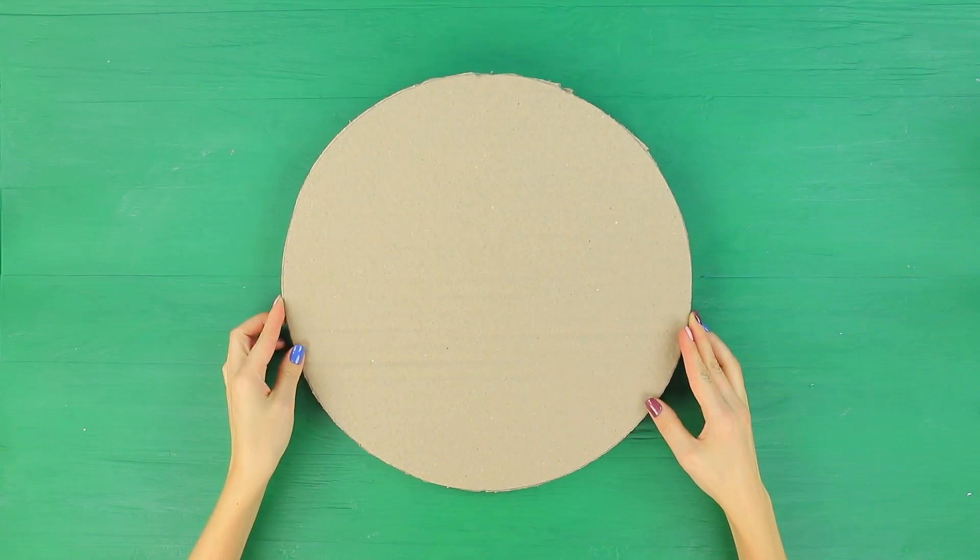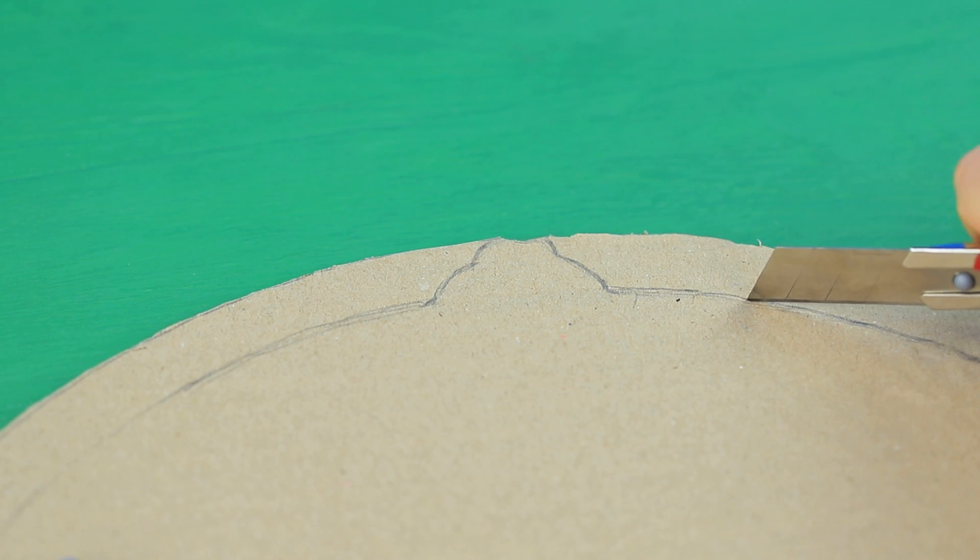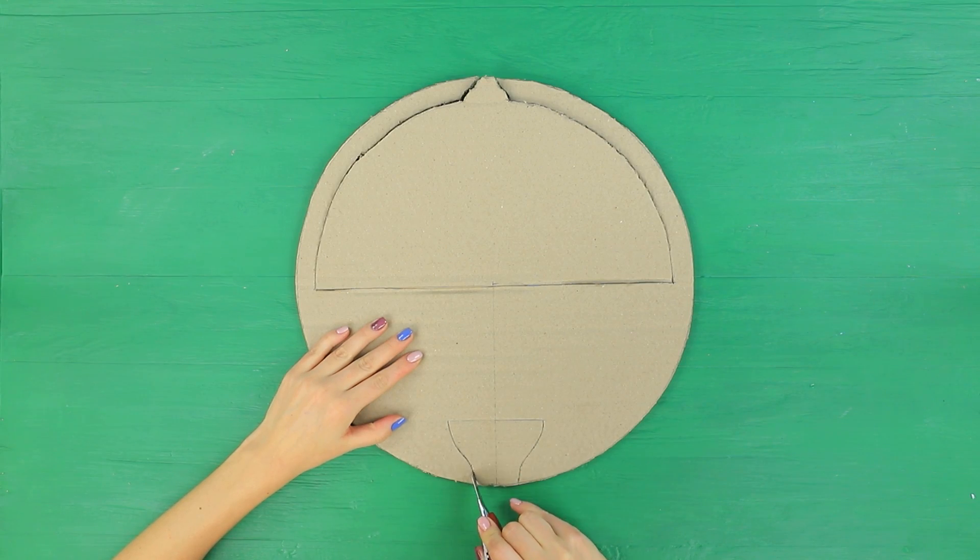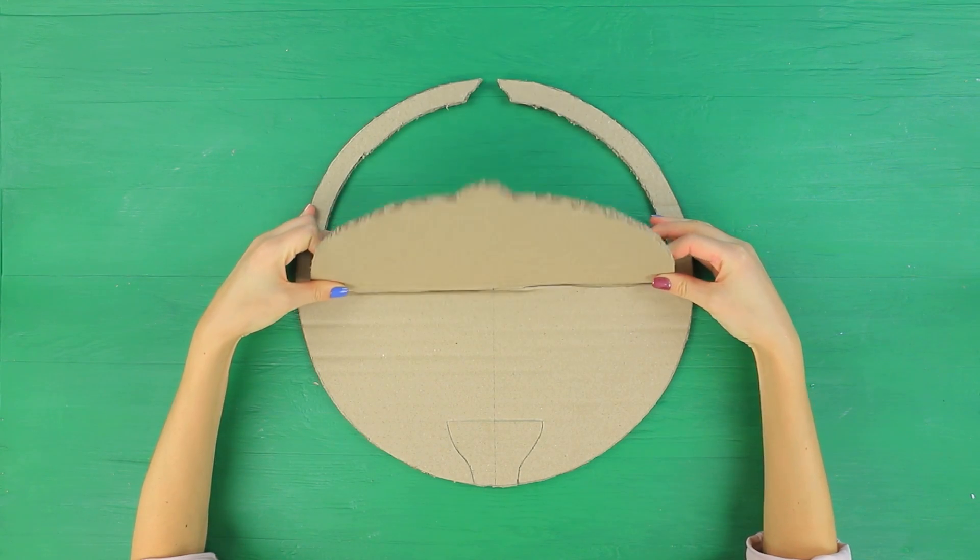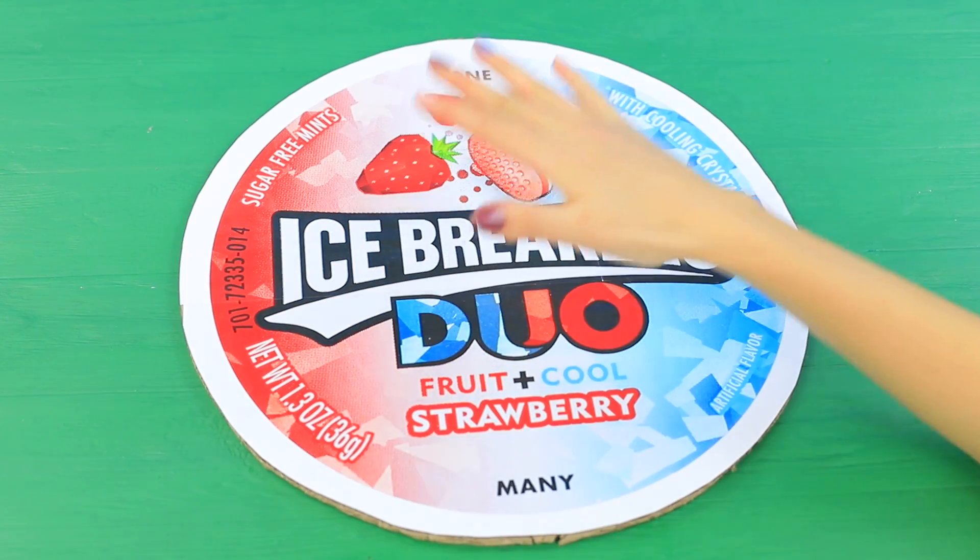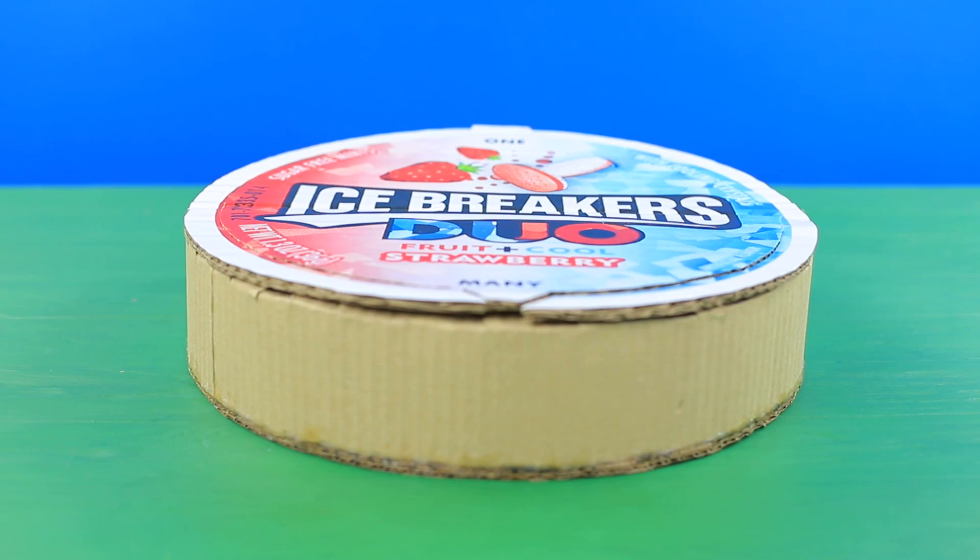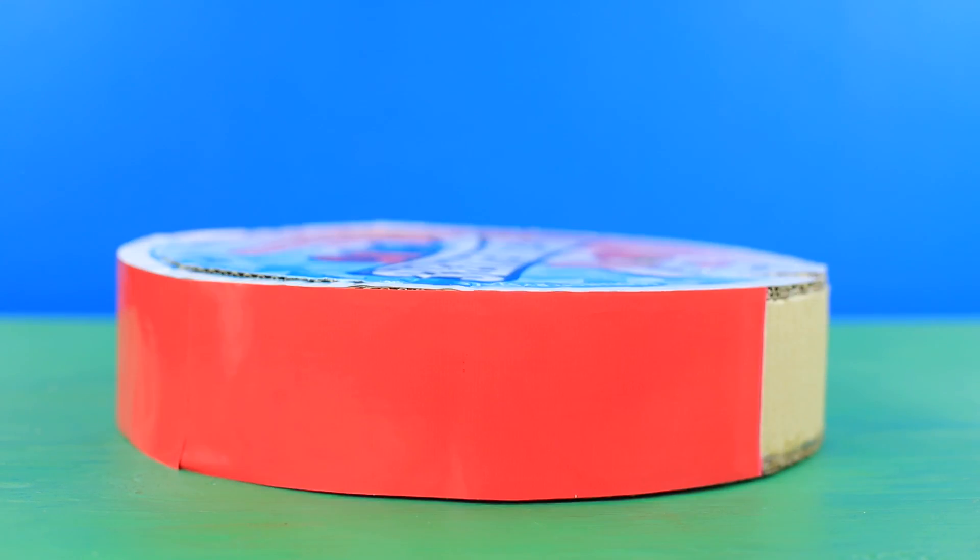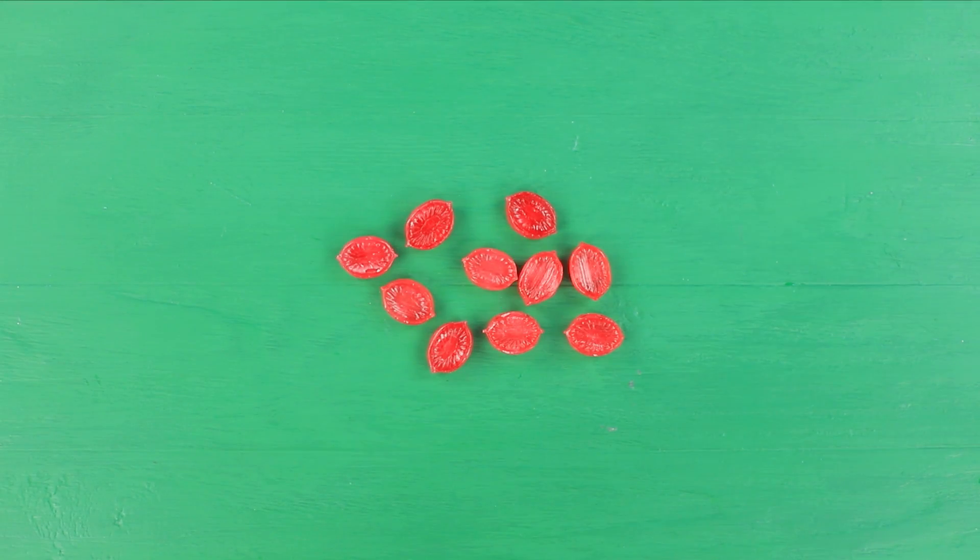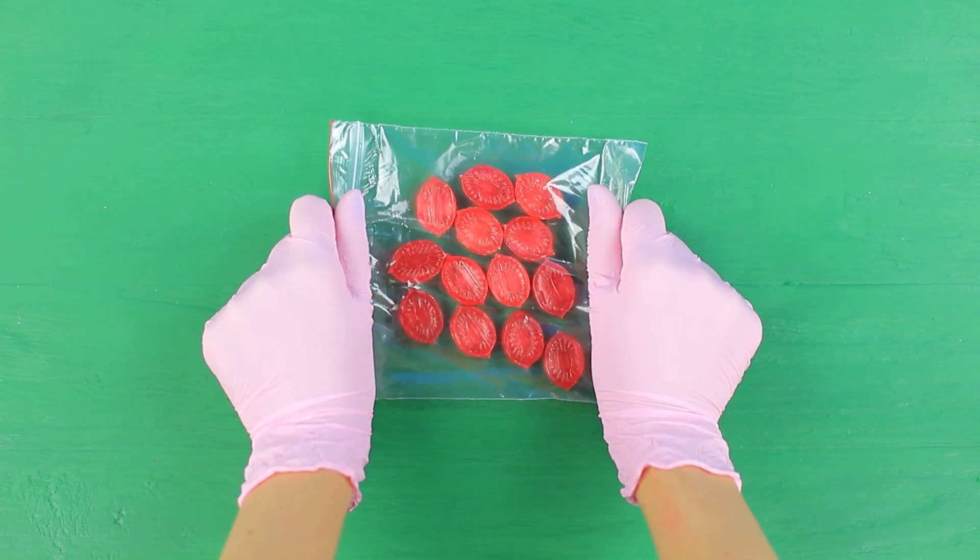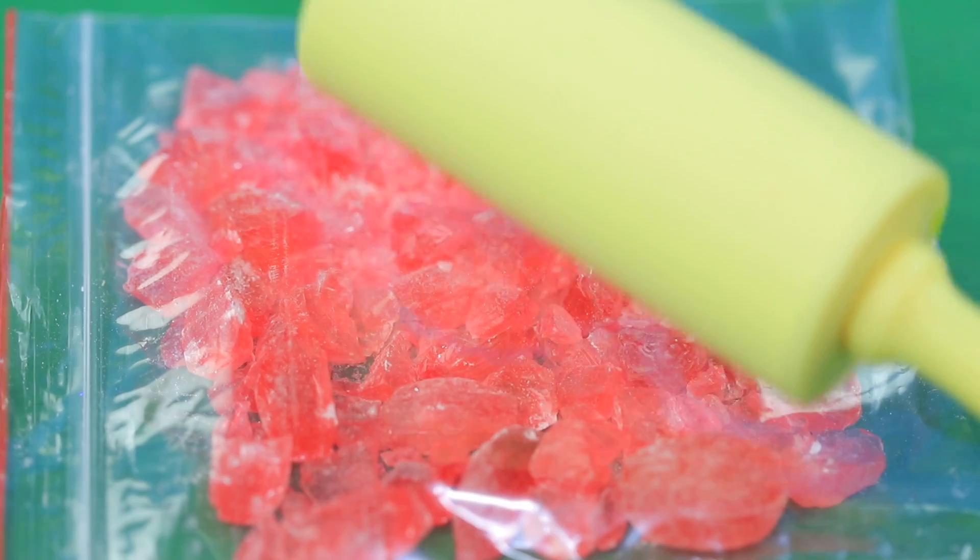Cut a big circle out of thick cardboard. Draw flaps. Cut them out and bend them. Attach a printed Icebreakers label on top. Make a round box out of cardboard. Wrap it in red paper. Put strawberry caramel candies into a ziplock bag. And crumble them.